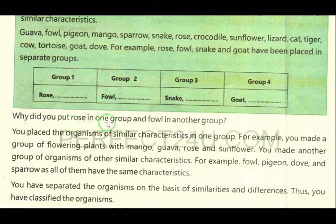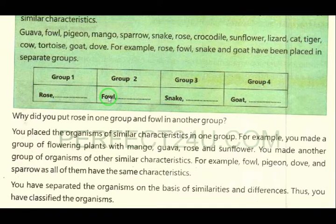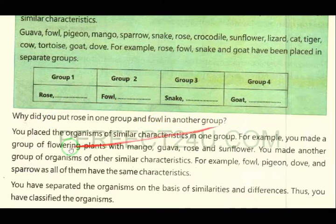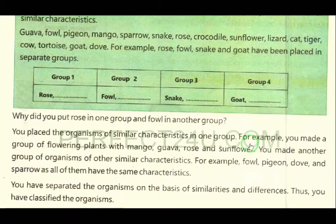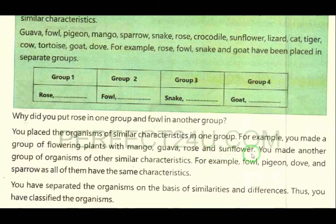Why did you put rose in one group and fowl in another group? Because rose is a plant and fowl is an animal. You placed the organisms of similar characteristics together. For example, you made a group of flowering plants with mango, guava, rose, and sunflower.